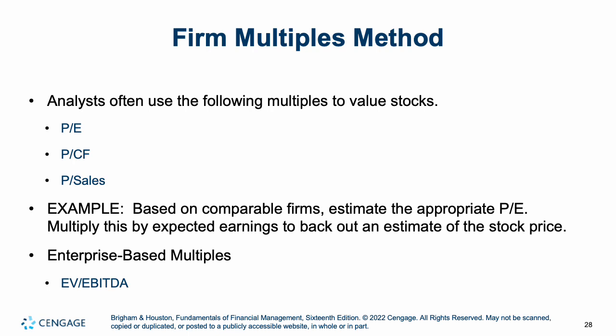What's the firm multiples method? We can use various multiples to value a company: price to earnings — share price divided by earnings per share; price to cash flow — share price divided by cash flow per share; and price to sales. Based on comparable firms, estimate the price-to-earnings multiple and multiply by expected earnings to back out an estimate of the stock price. We can also find enterprise value over EBITDA — earnings before interest, taxes, depreciation, and amortization — as an enterprise-based multiple.